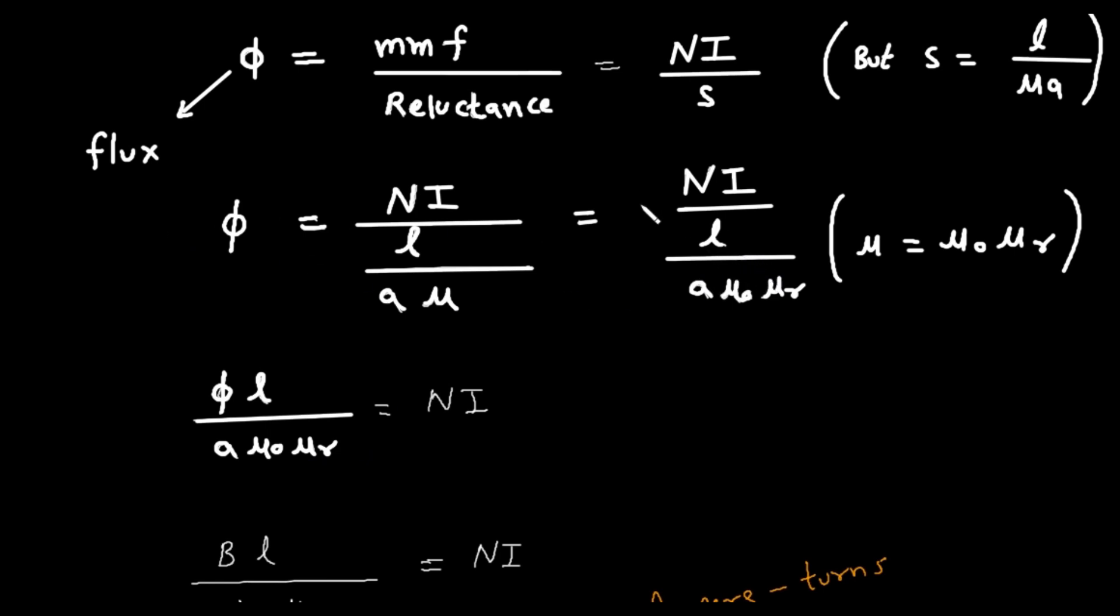Currently it is in division, so on left side it will be in multiplication. So phi into l upon a into mu zero into mu r equals n i.